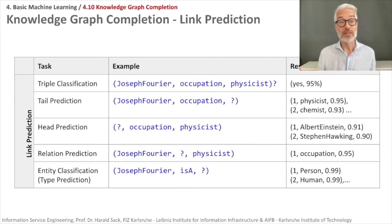Then there is entity classification, also referred to as type prediction, as a special subtask of link prediction. There you only look at a specific property, which is IsA, which means RDF type. You have some subject, you have RDF type, and you want to know what type it is. For Joseph Fourier, you would have to find out that this guy is of type person, of type human, for example. These are methods how you could evaluate your graph embedding model.